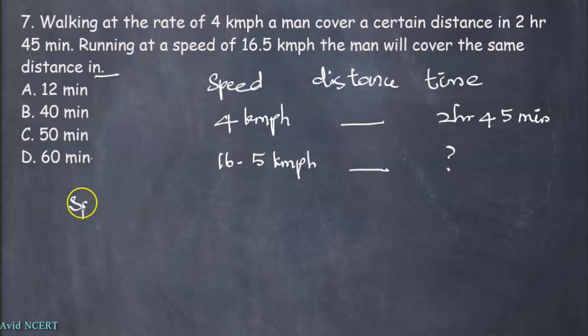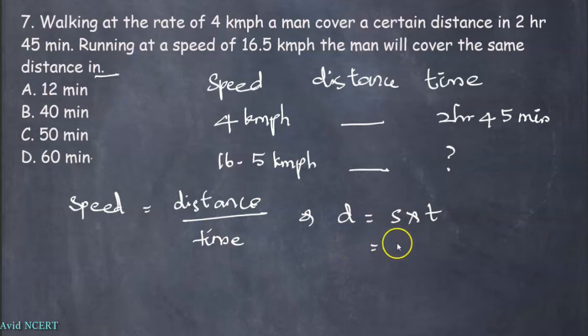From the first data of speed and time we can find distance. The formula we know is speed equals distance by time, so we need to know distance. From this we can find distance equals speed into time. Substitute the values: speed value is 4 into time is 2 hours 45 minutes. 2 hour 45 minutes should be converted into hours, so 45 minutes can be converted into hours by dividing by 60.